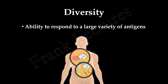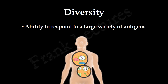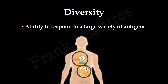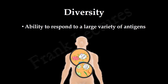You will be surprised to know that each of us is capable of producing billions of different antibodies and T-cell receptors. Thus the adaptive immune system recognizes countless numbers of different foreign antigens, and is capable of generating enormous and different kinds of recognition receptors, which contribute to its diversity.